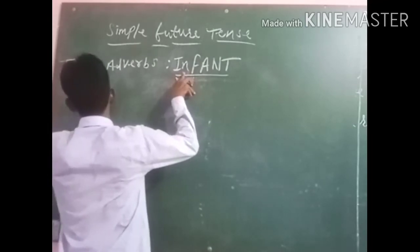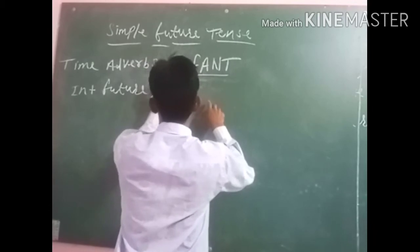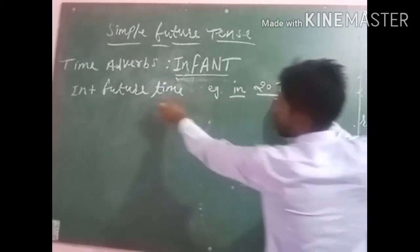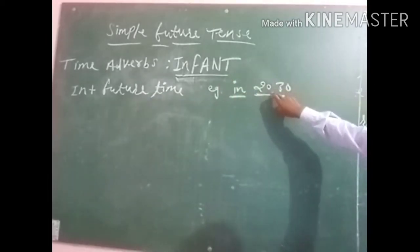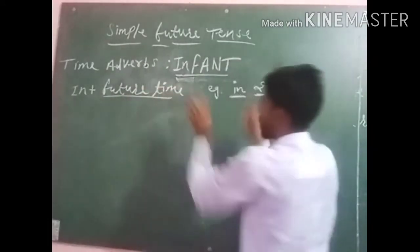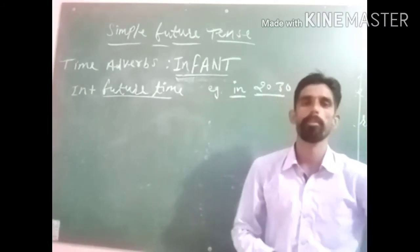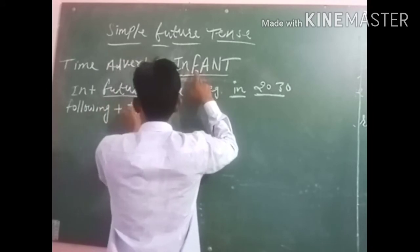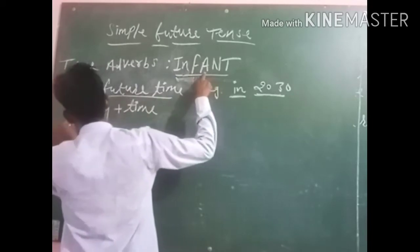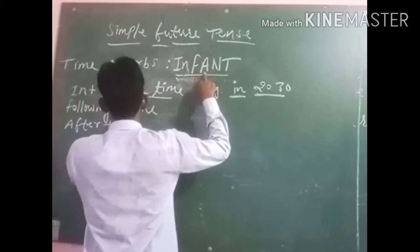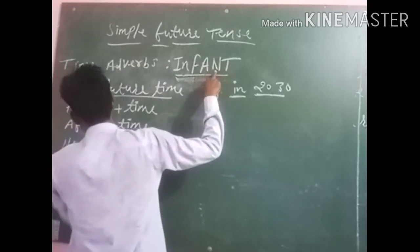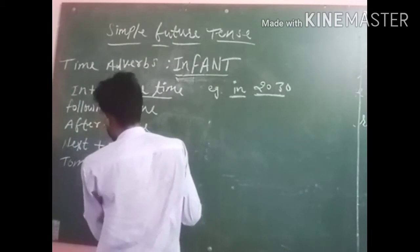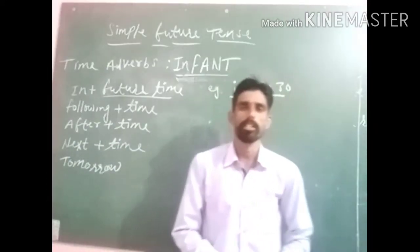Here 'I' means 'in plus future time.' For example, if I say 'in 2030' — in plus future time — there is 'in' followed by '2030,' which shows future time. 'N' stands for 'following plus time.' 'F' is 'after plus time.' 'A' is 'and next plus time.' And 'T' stands for 'tomorrow,' which is the most frequent time adverb used in this tense.